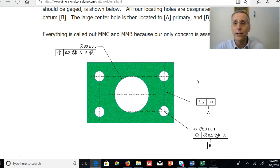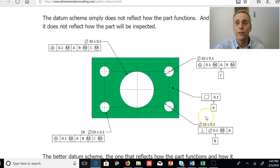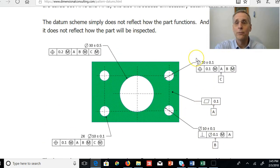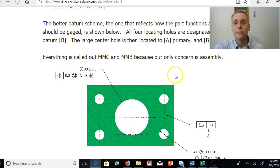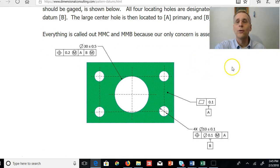So I hope now when I look at drawings, at least drawings that you make, when I see four holes that constitute a pattern, four holes that contribute equally to the location of this part, I will see them called out with patterned datums rather than seeing them called out with two datums called out as B and C and then everything else located to B and C. Use the patterned datums when it's appropriate.